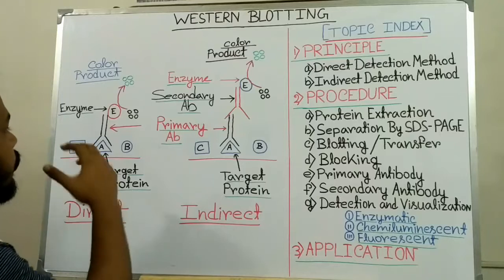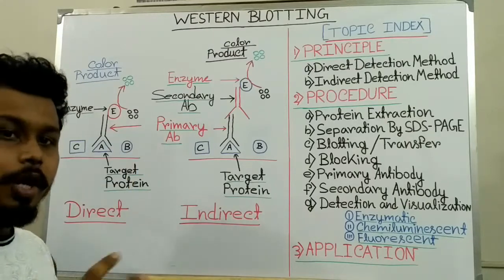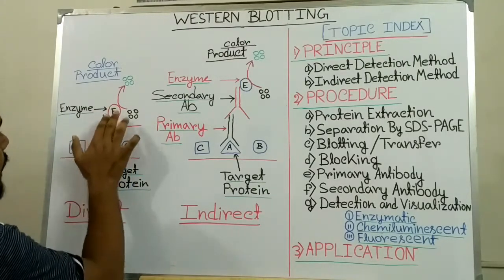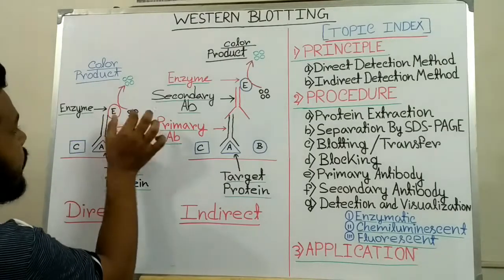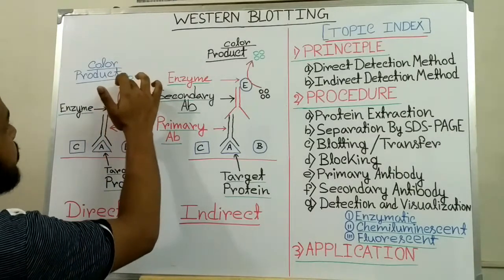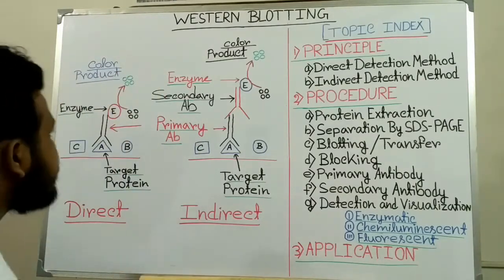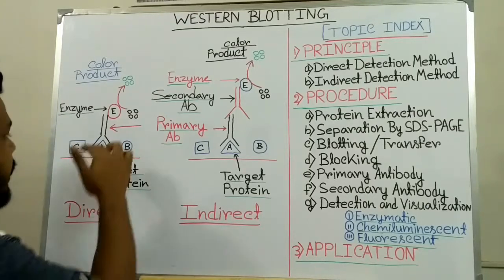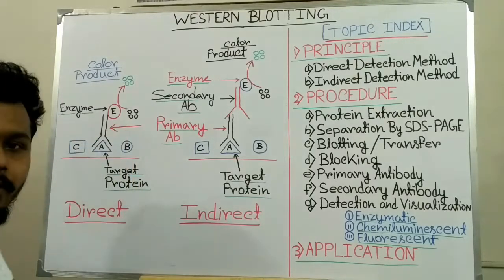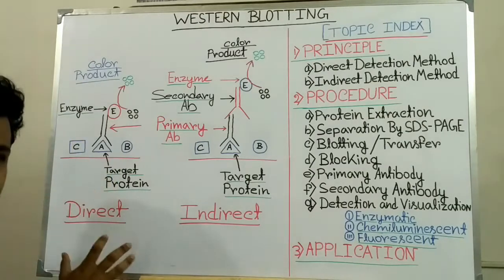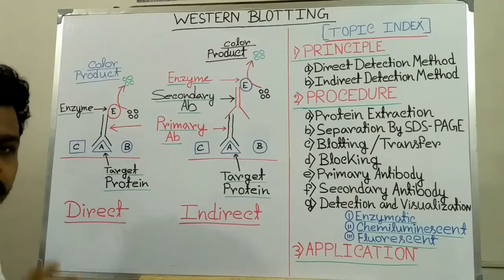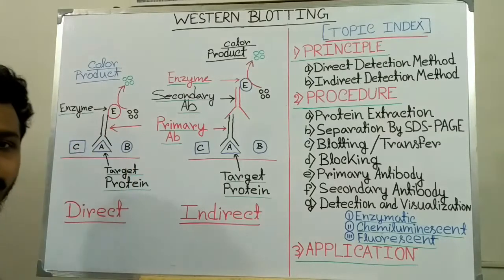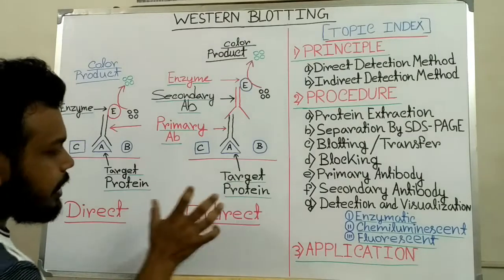To get the signal — whether protein A is present on the membrane and whether antigen-antibody interaction has occurred — we conjugate an enzyme to the antibody. When we add substrate for this enzyme, it converts the substrate to a colored product, which we can visualize and interpret that protein A is present on the membrane. This is called the direct detection method because we get the signal directly from the antigen-antibody interaction.